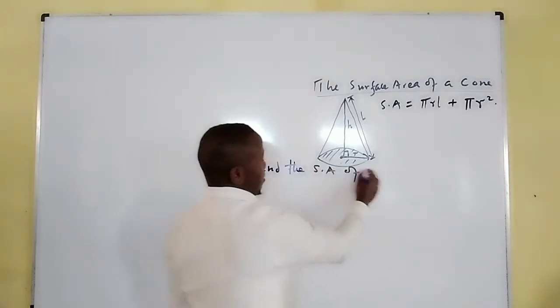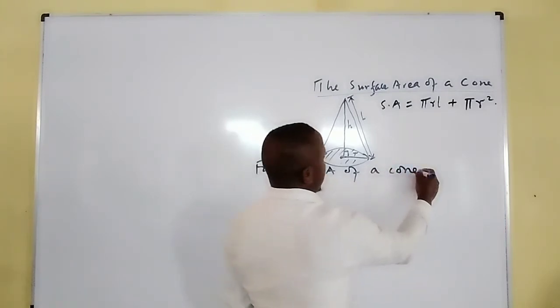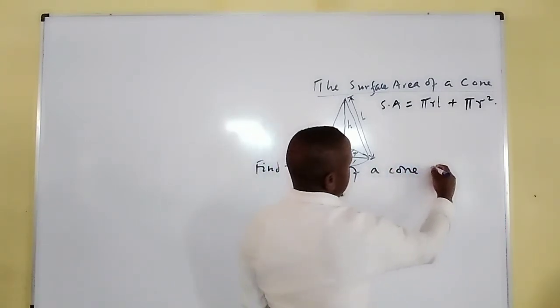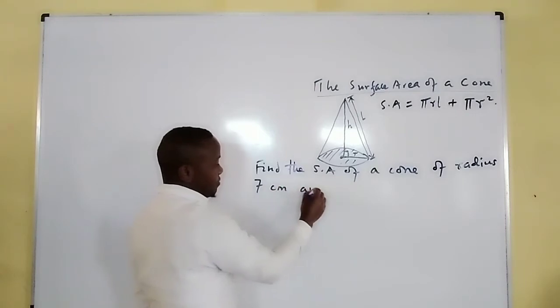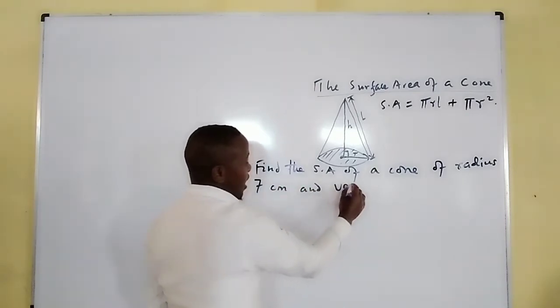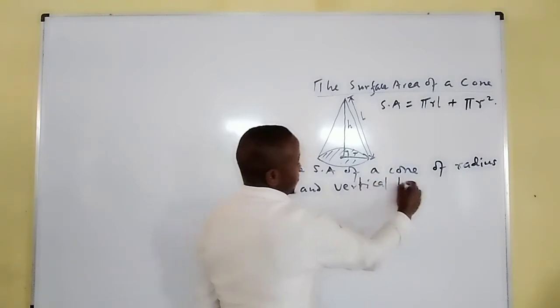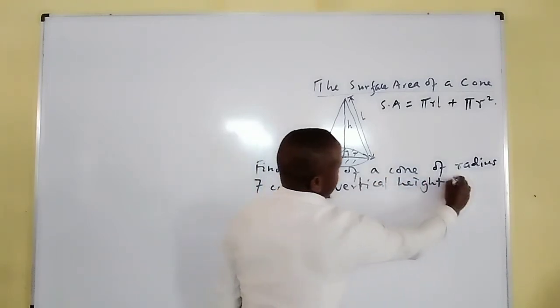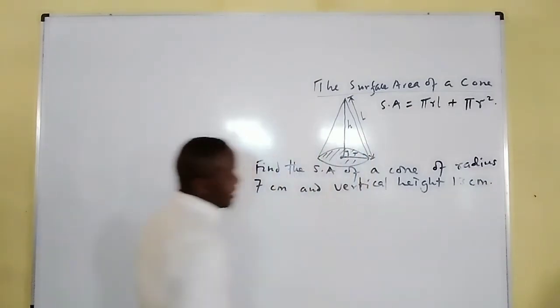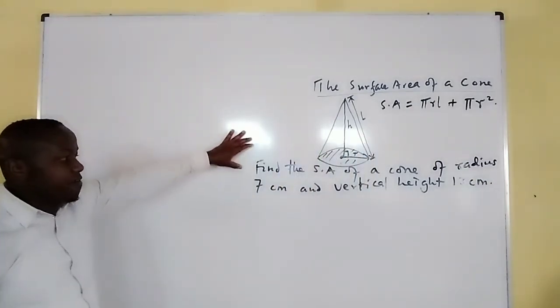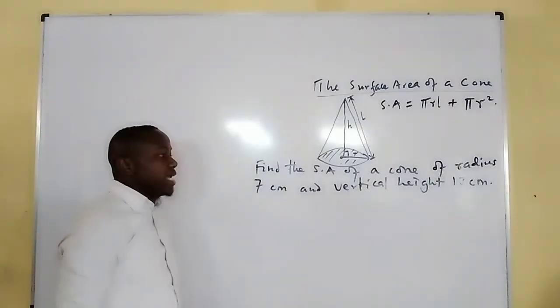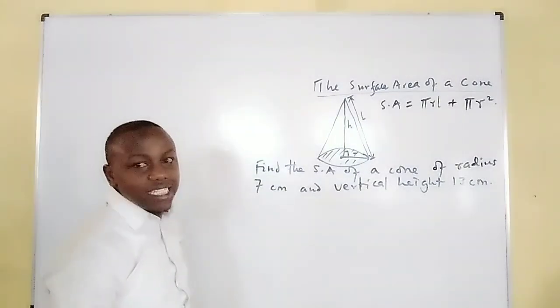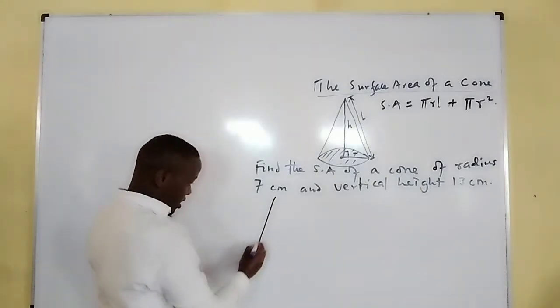the surface area of a cone of base radius 7 centimeters and vertical height 13 centimeters, this is how you proceed. We are finding the surface area. So the cone is in this shape.